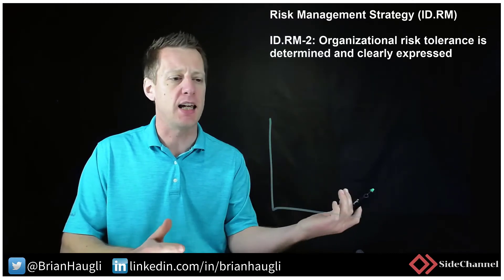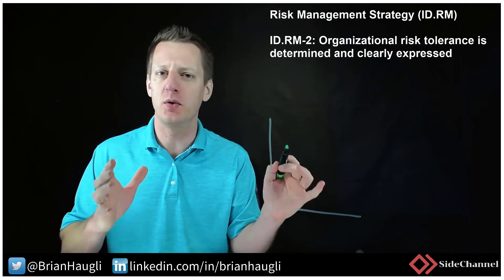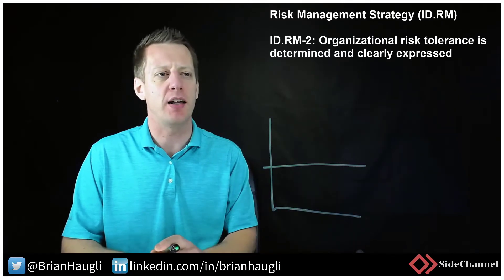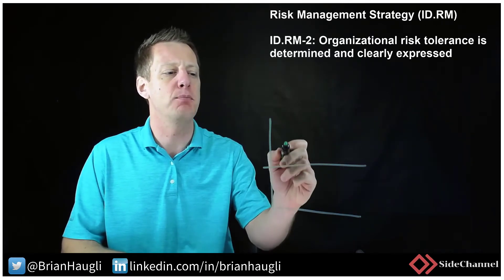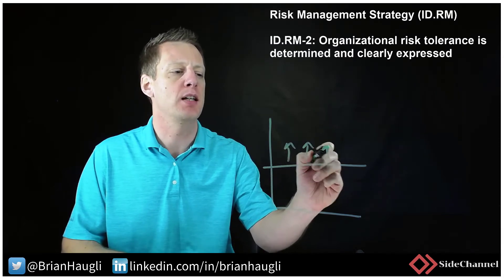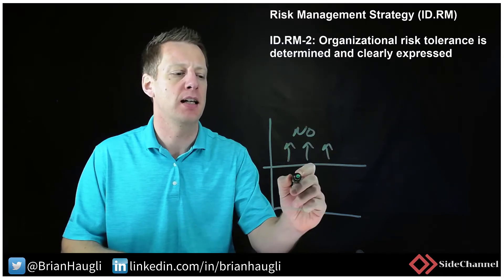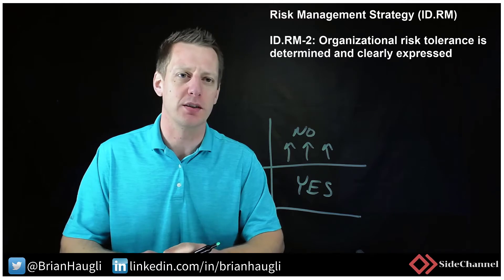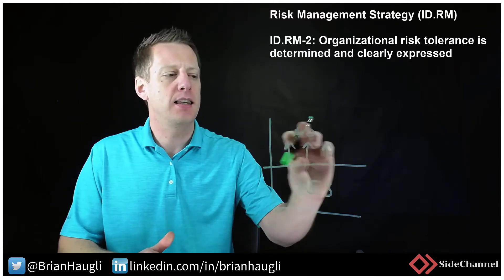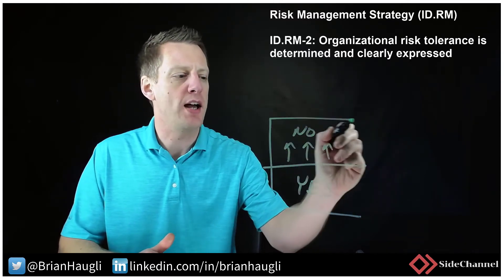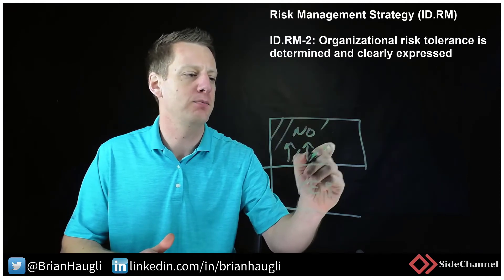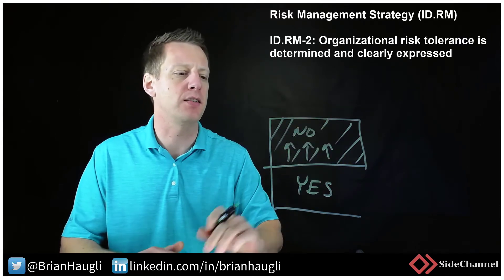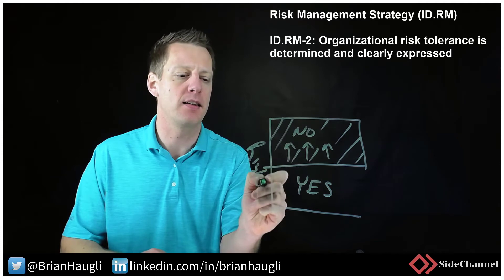When establishing a risk tolerance, we need to do it in the most basic way. If the risk tolerance of the organization is set at a certain threshold through discussions, anything above it should not be accepted, and anything below should be accepted. Now, 'accepted' doesn't mean ignore — you still need to address those risks within that space.